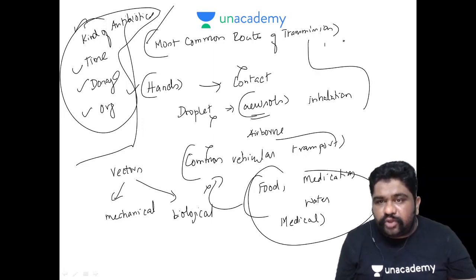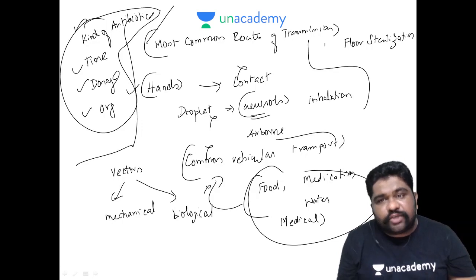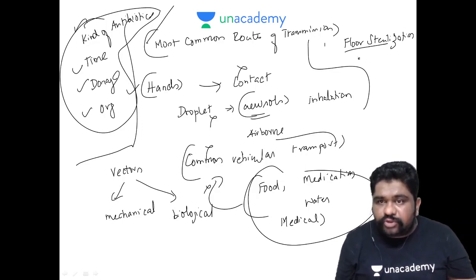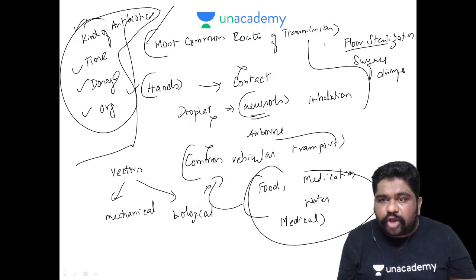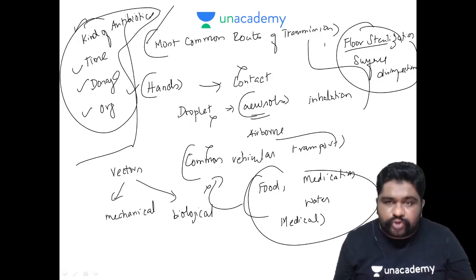Also remember, you have to avoid all these methods of spread of transfer. How can you do it? You can go for floor sterilization and surface disinfection. Please follow all the protocols. Floor sterilization and surface disinfection is one of the common methods by which you can try to break the chain of nosocomial transmission.